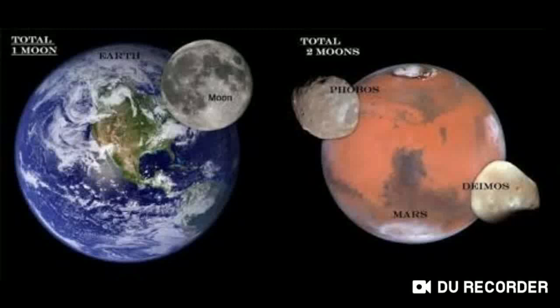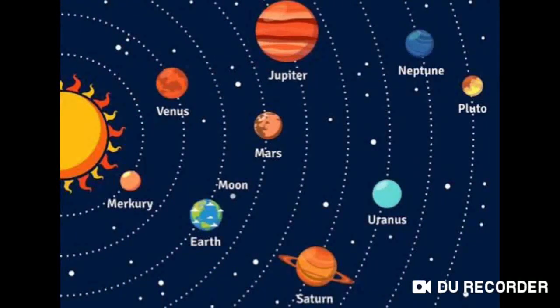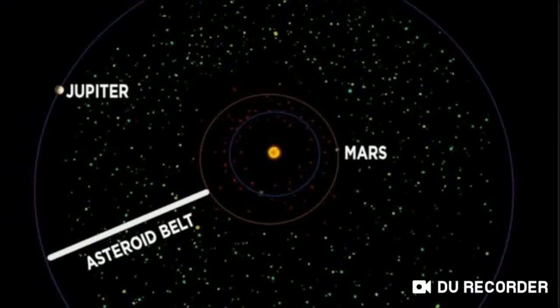Satellites are heavenly bodies which revolve around a planet. Now let us talk about dwarf planets. Dwarf planets are small heavenly bodies that revolve independently around the Sun. Pluto, as you can see in this photo, is the most well-known dwarf planet.